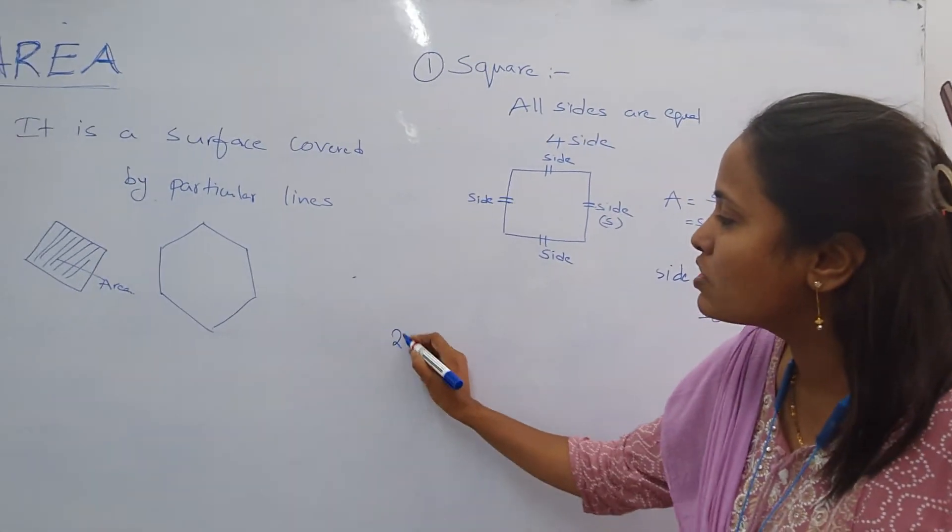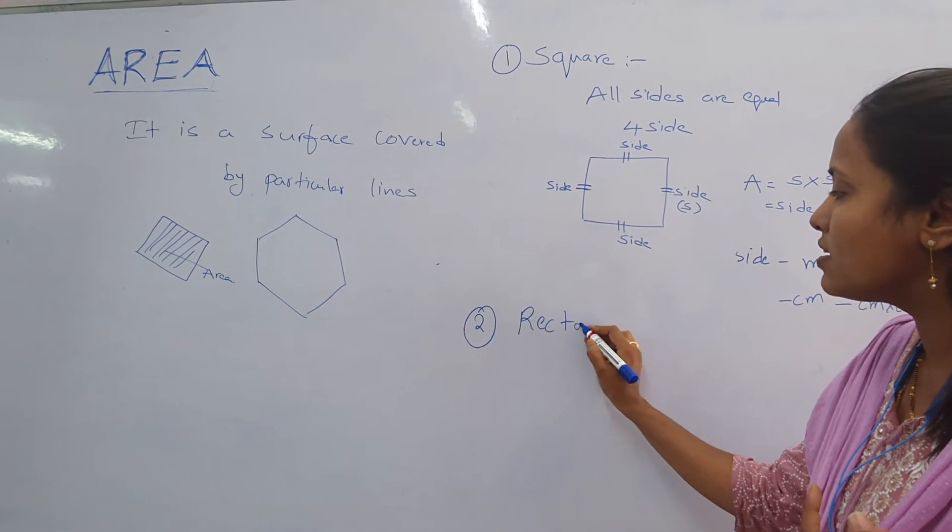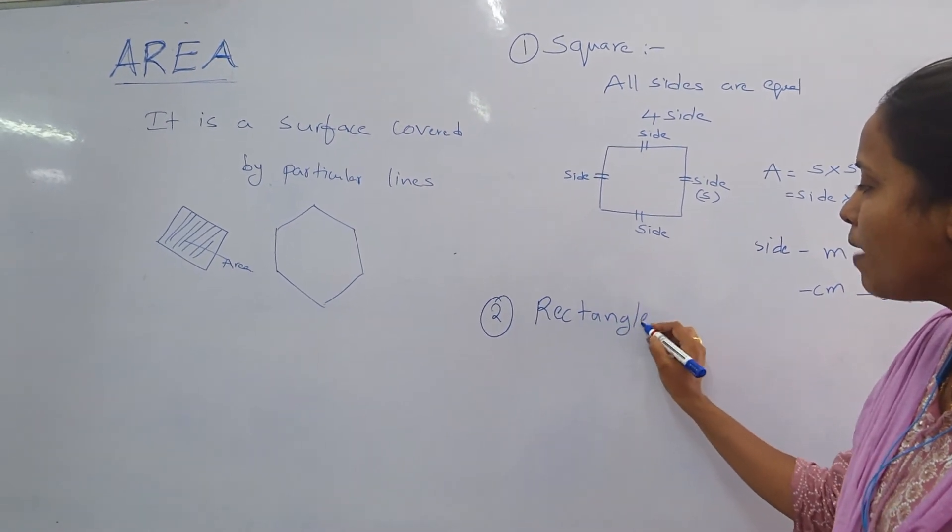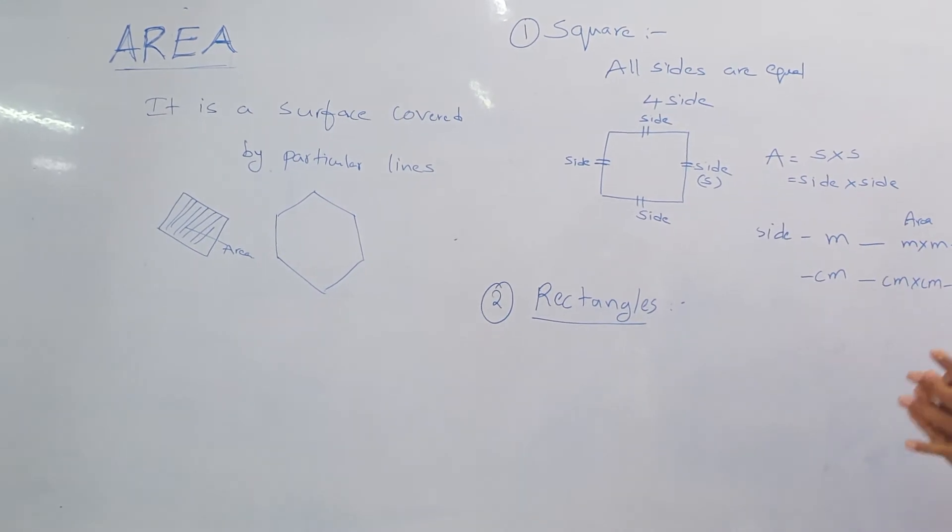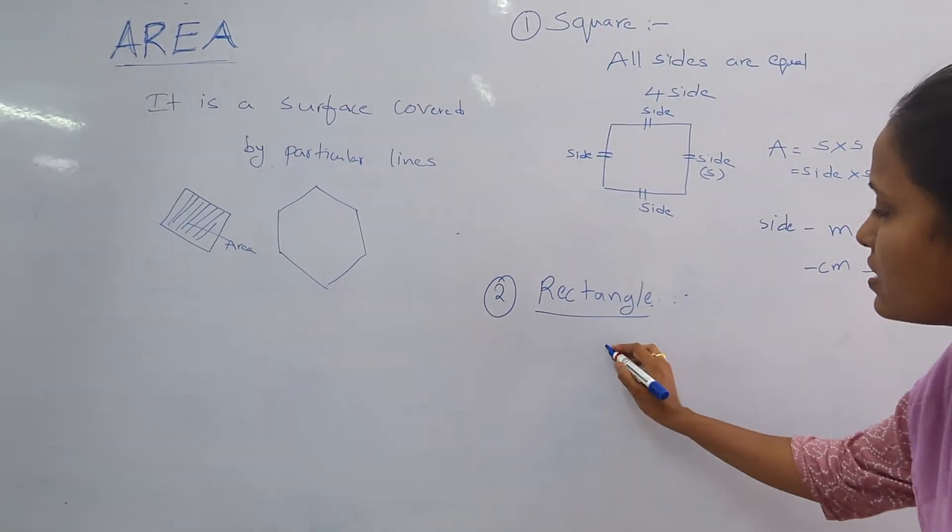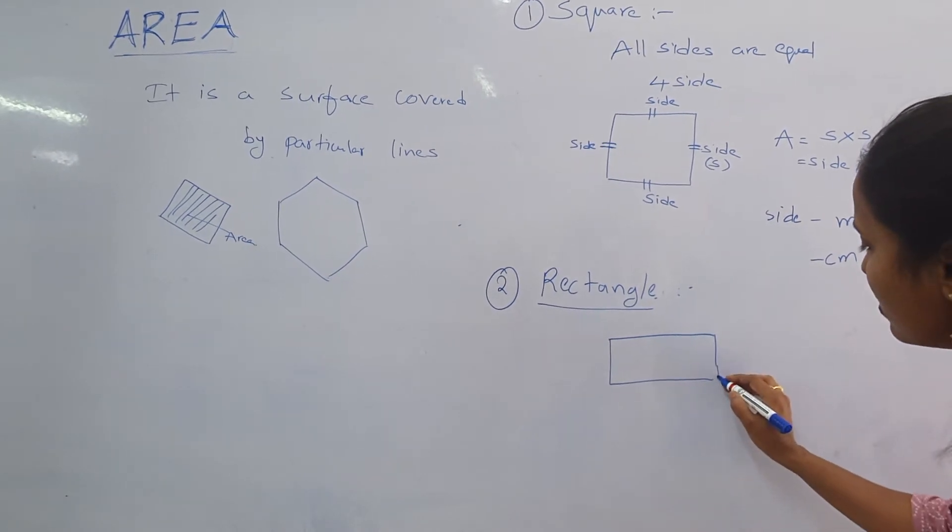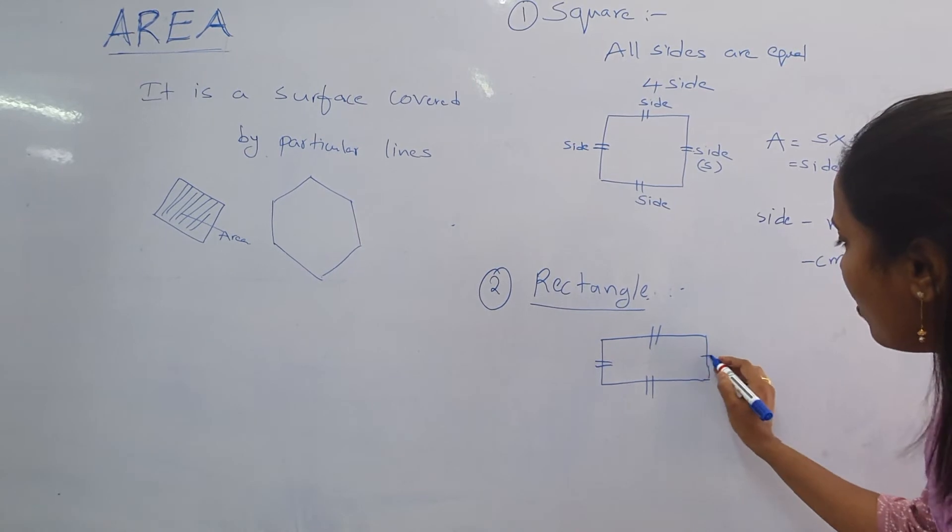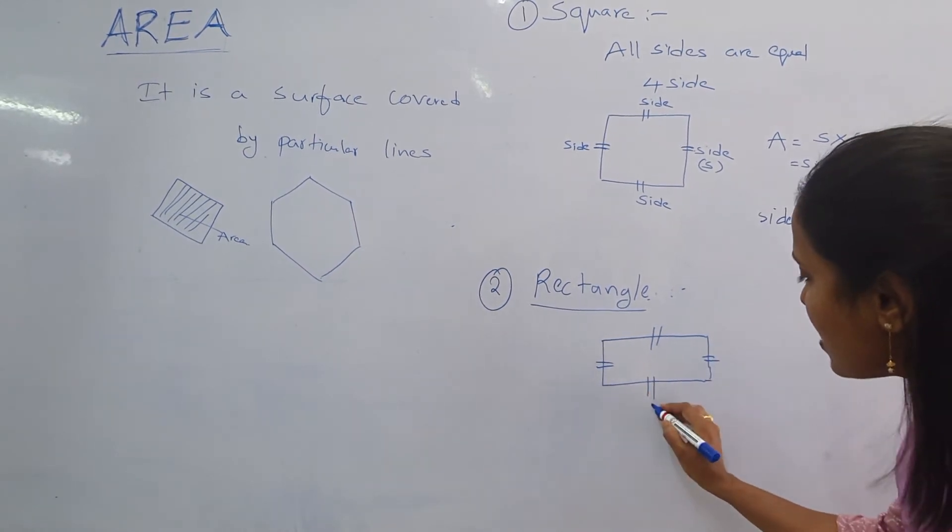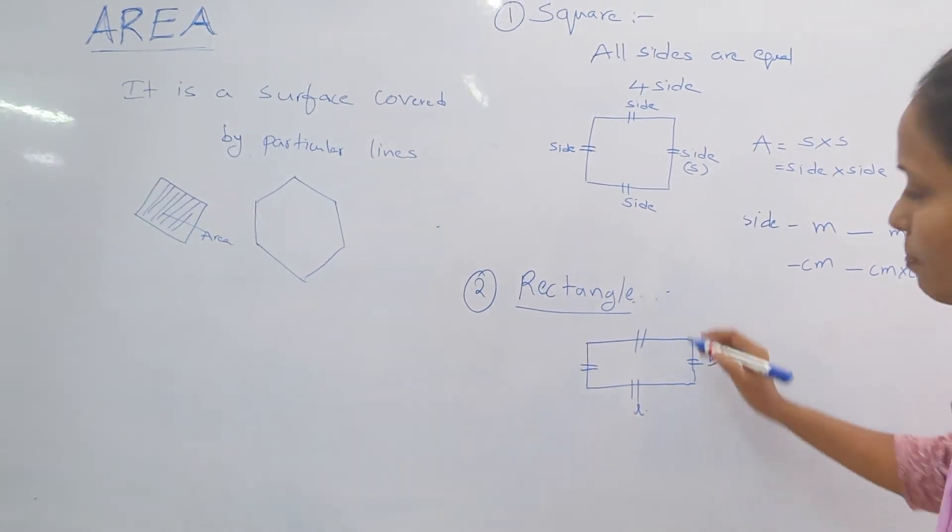The next geometrical shape is rectangle. The rectangle has four sides, but the opposite sides are equal. These opposite sides are equal, these two are equal, these two are equal. We call this length and this breadth.